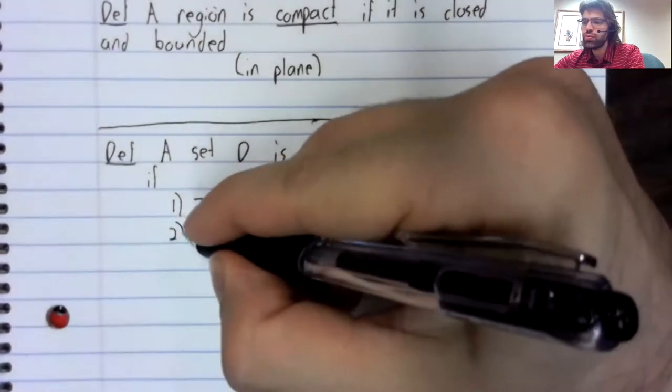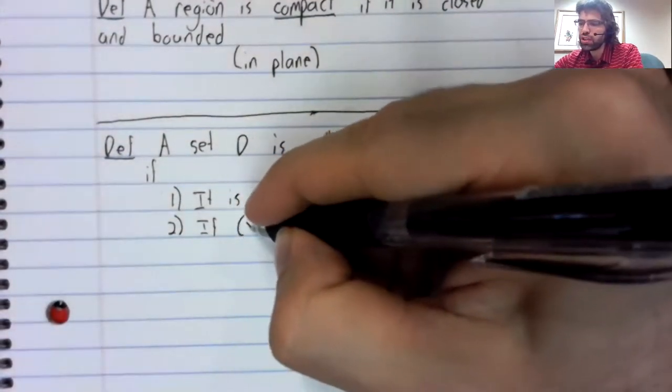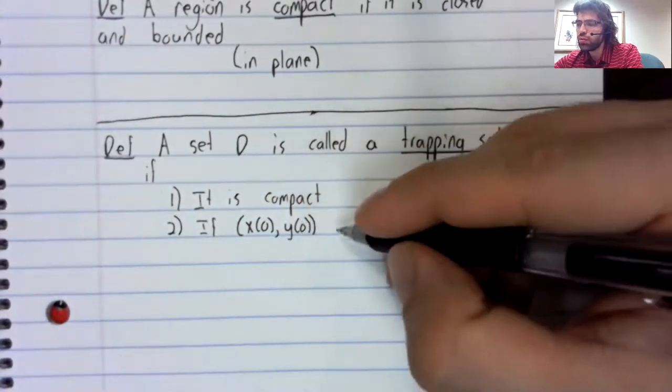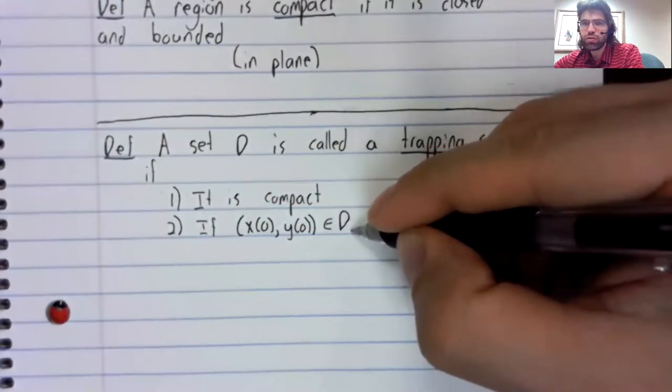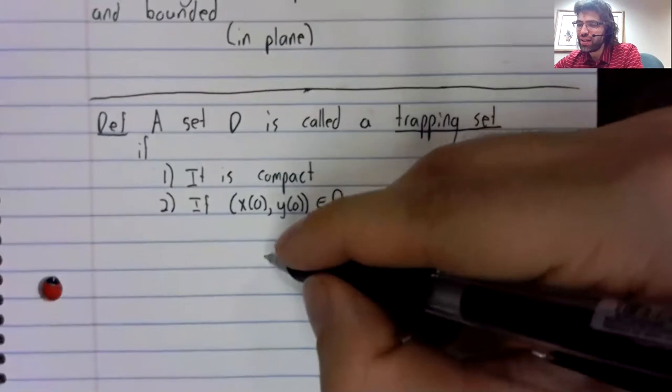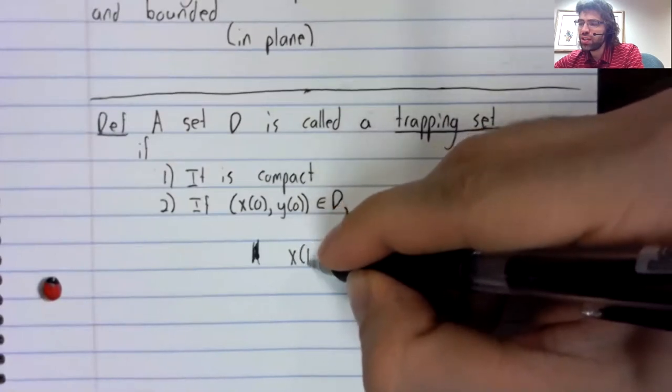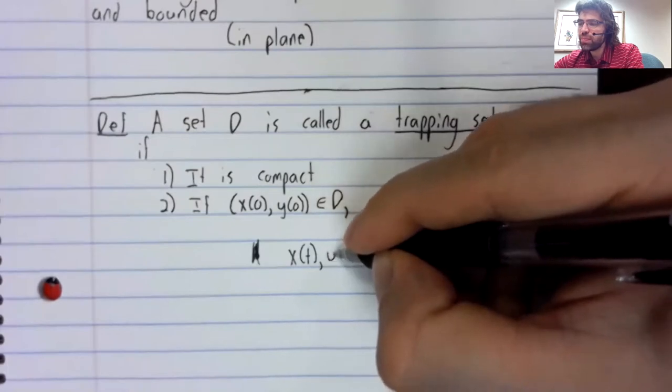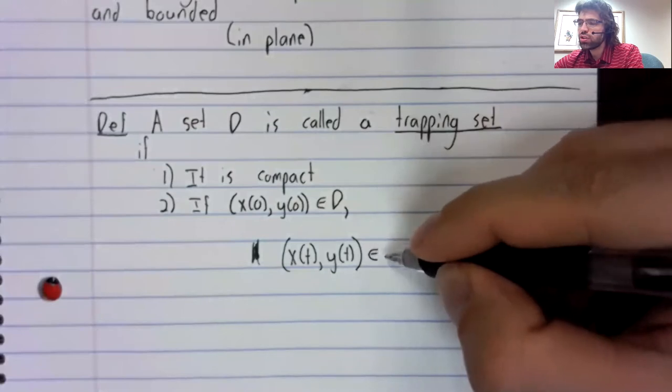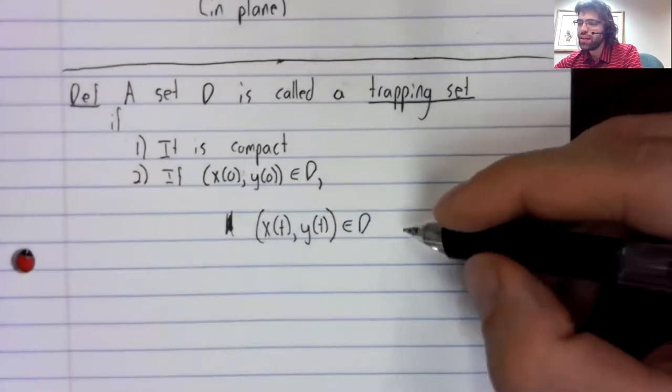And two, if we start in the trapping region, if x of 0 comma y of 0 is in the trapping region, we are trapped in the region. That is to say, that as time progresses, x of t comma y of t cannot leave the region. If we start there, we remain there.